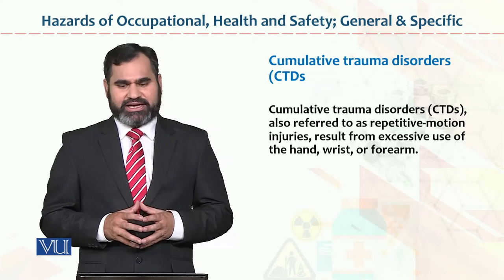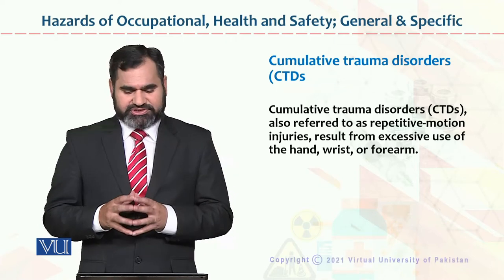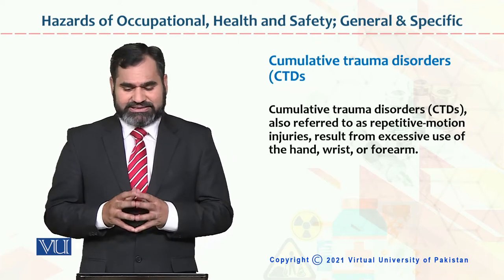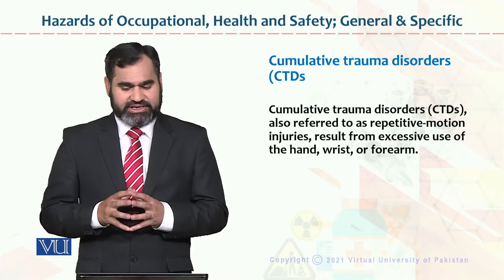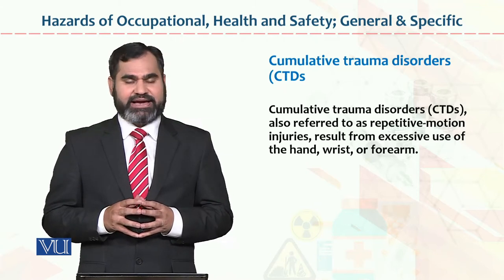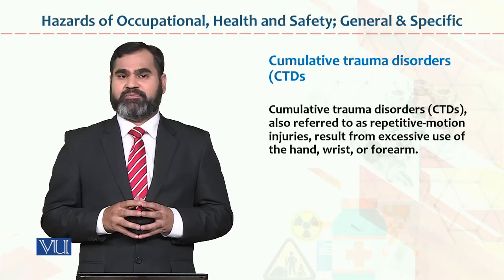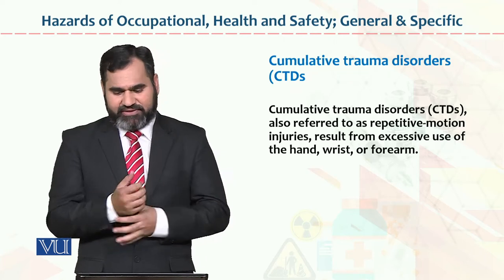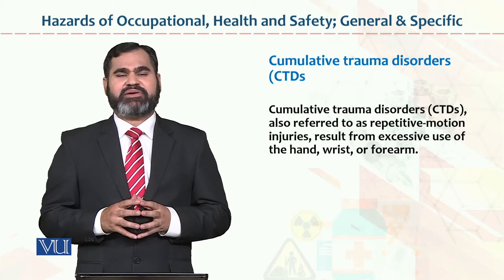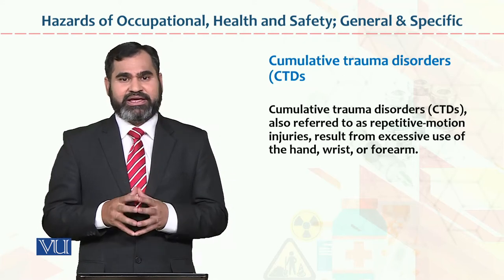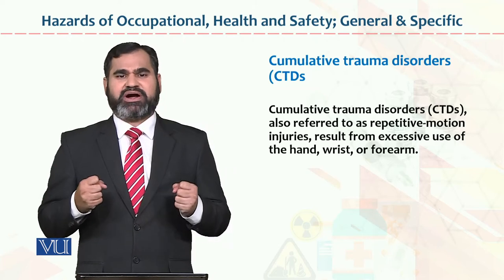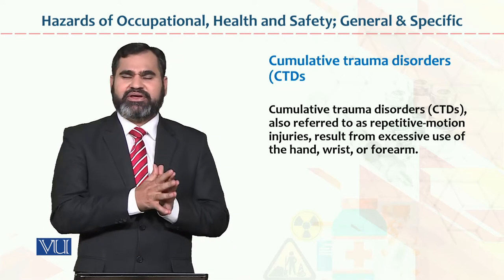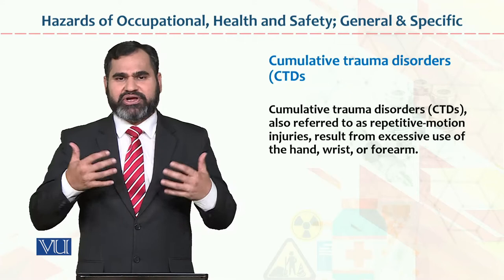This is what we call cumulative trauma disorder. Cumulative trauma disorder — if we have a specific definition for students — basically, cumulative trauma disorder also refers to as repetitive motion injuries, which result from excessive use of the hand, wrist, and forearm. The technical point is that the musculoskeletal parts of the body — how they are used in regard to organizations. If your body is involved in a physical activity, we have to consider how those components are used.